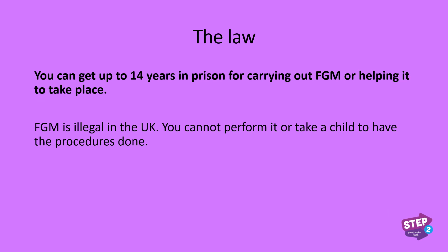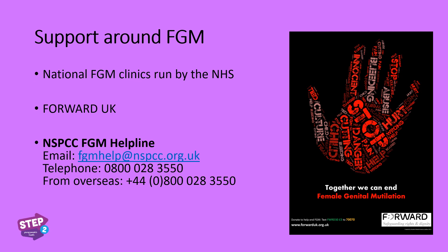You can get up to 14 years in prison for carrying out FGM or for helping it to take place. So if you are a parent who has taken their child out of the country to have FGM done, you could be looking at 14 years in prison. There are lots of support systems around FGM, including national FGM clinics run by the NHS, Forward UK, and the NSPCC FGM helpline. If you feel at risk, please get support — it can be scary and difficult, but speaking up could have a very positive impact on your life. If you know of friends this may be happening to, please also call one of those organisations.